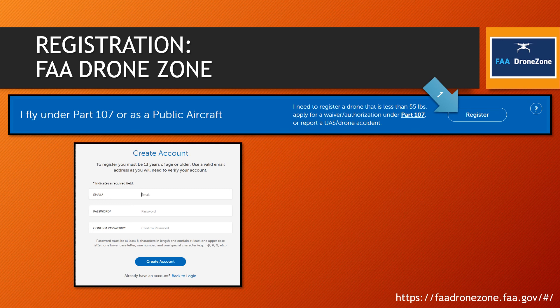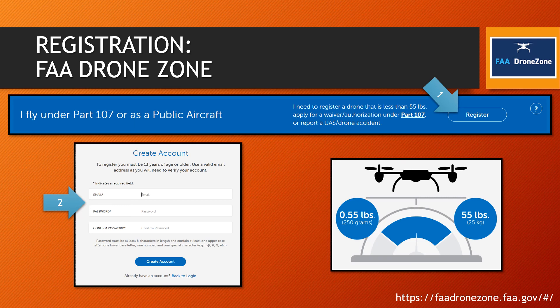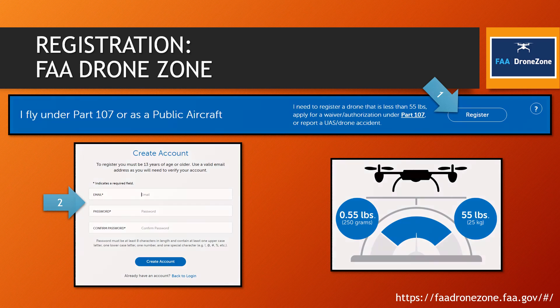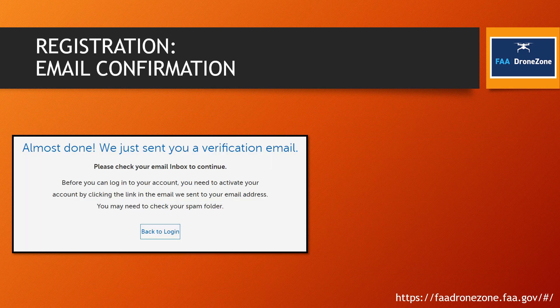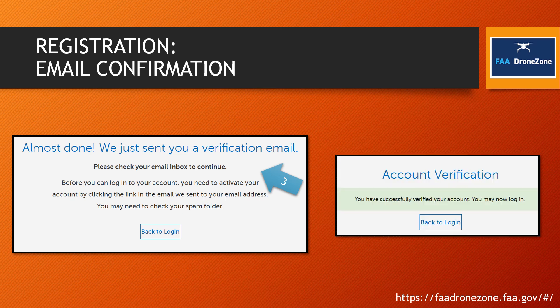I knew I needed to register under Part 107, so I clicked there and created an account. You have to be at least 13 years of age or older — enter your email, password, and so on. My drone falls between the 0.55 to 55 pound weight limit, which is why a lot of people are flying tiny micro drones to avoid registration requirements. Once done, they send a quick email confirmation — check your inbox or spam folder — then just click the verify button.